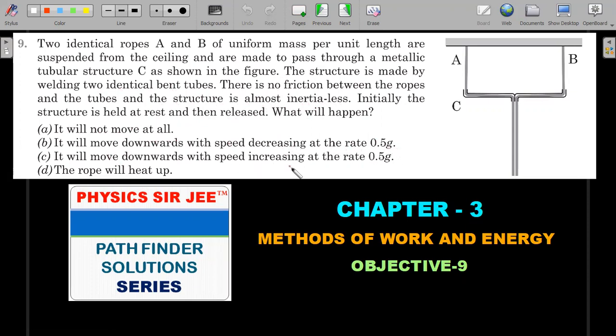Option A: It will not move at all. Option B: It will move downwards with speed decreasing at a rate of g by 2. Option C: It will move downwards with speed increasing at a rate of g by 2, and Option D: The rope will heat up. There is a chance of one or more than one options being correct. So you need to understand that there is a bent tubular structure—whatever bent part you see here is a welded part—and there are two ropes, one rope from this side and one rope from this side connected to the ceiling.